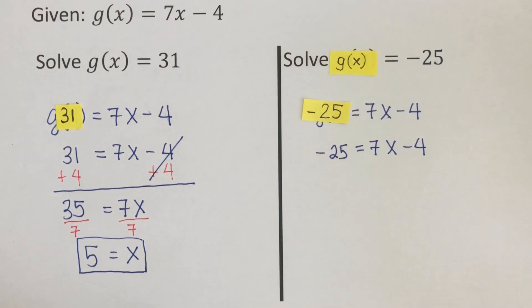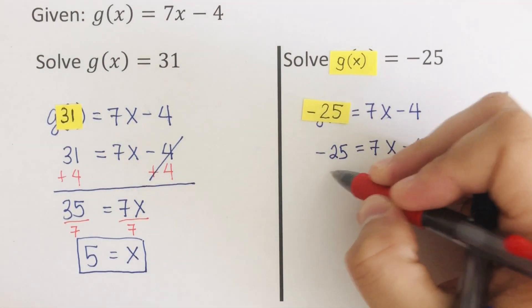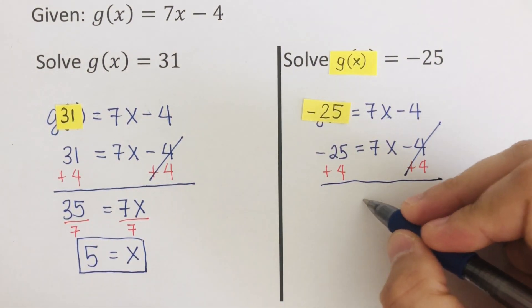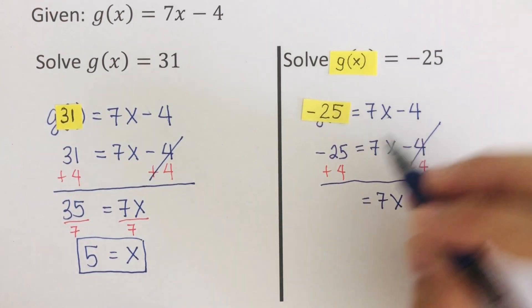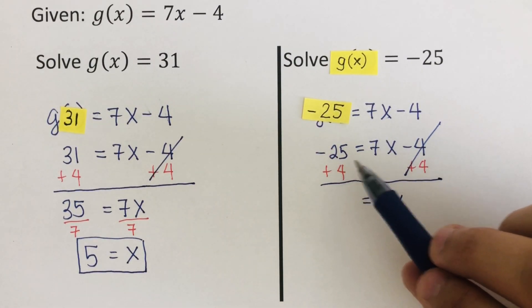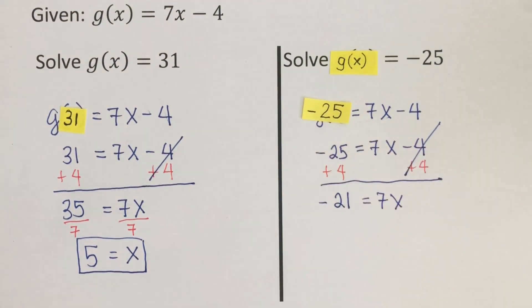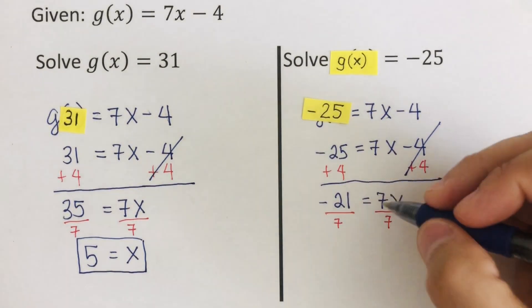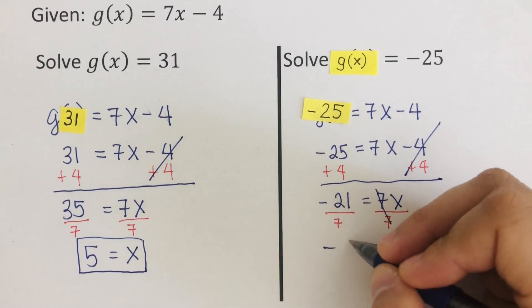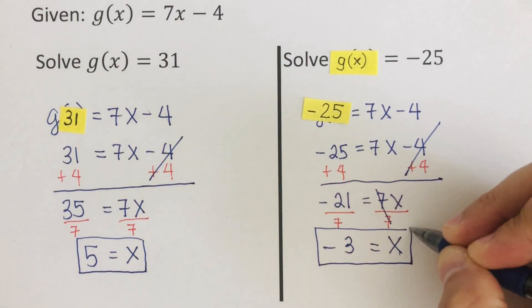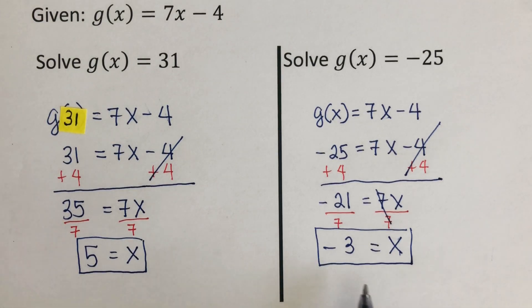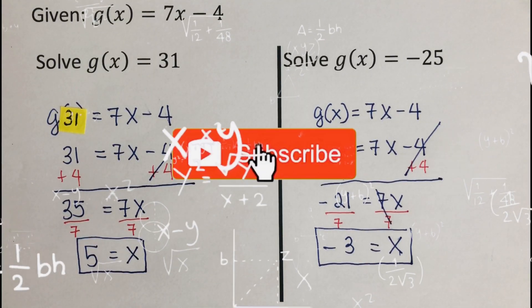Adding 4 to both sides: −25 + 4 = 7x, so 7x = −21. Dividing both sides by 7, our x = −3. This is the x value when g(x) = −25. Did you get the same answer? If you find this video helpful, hit like and subscribe for more math videos.